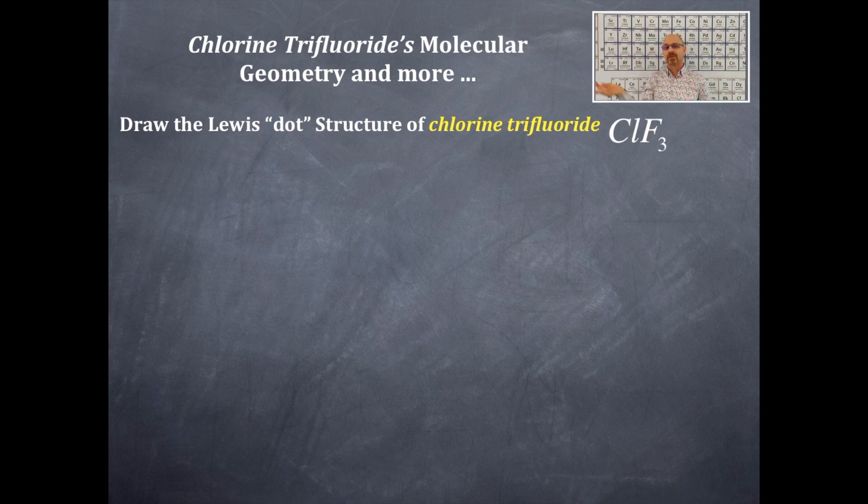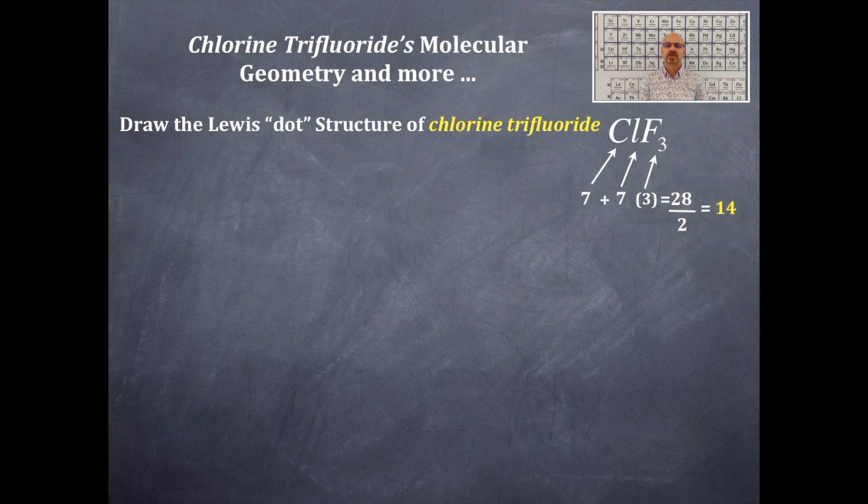You're going to look on your periodic table to get the number of valence electrons for chlorine and for fluorine. They're the same. There are three fluorines, however, we're going to sum these numbers up. Then we're going to get 28. We're going to divide these by two, then we get our 14 pairs of electrons.